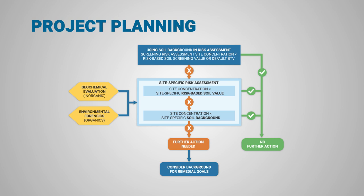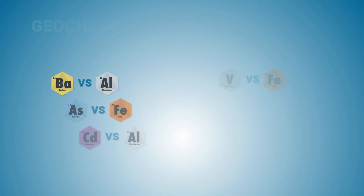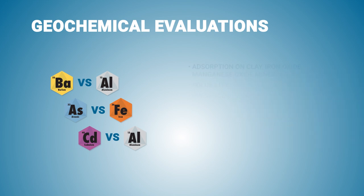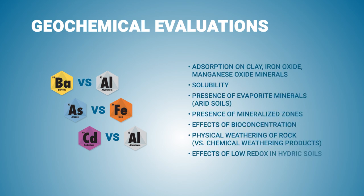Now, let's take a closer look at geochemical evaluations, and then we'll look at environmental forensics. Section 5 of the ITRC guidance document discusses geochemical evaluations and what to keep in mind during these evaluations, such as the different processes that control the element concentrations in your soil samples. Typically, the most important control is adsorption-desorption reactions on mineral surfaces.